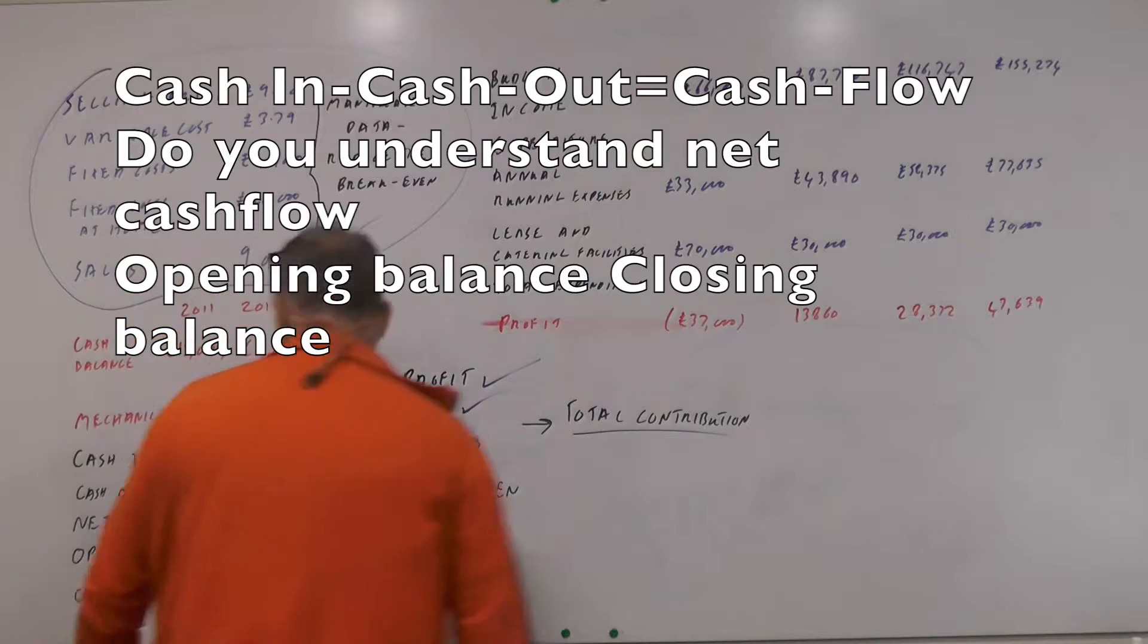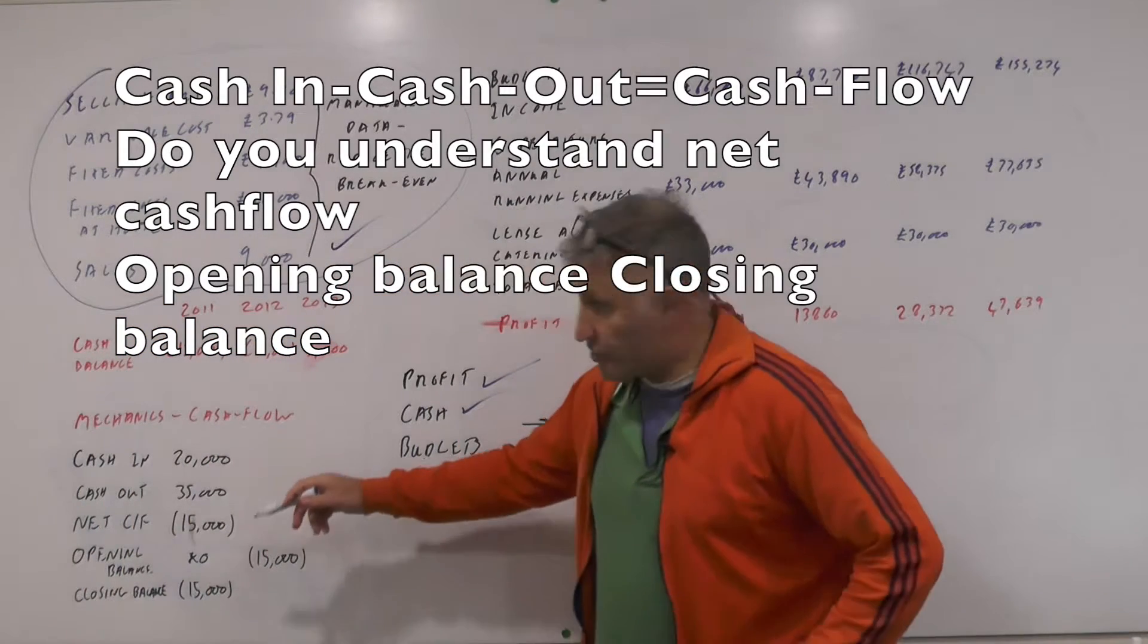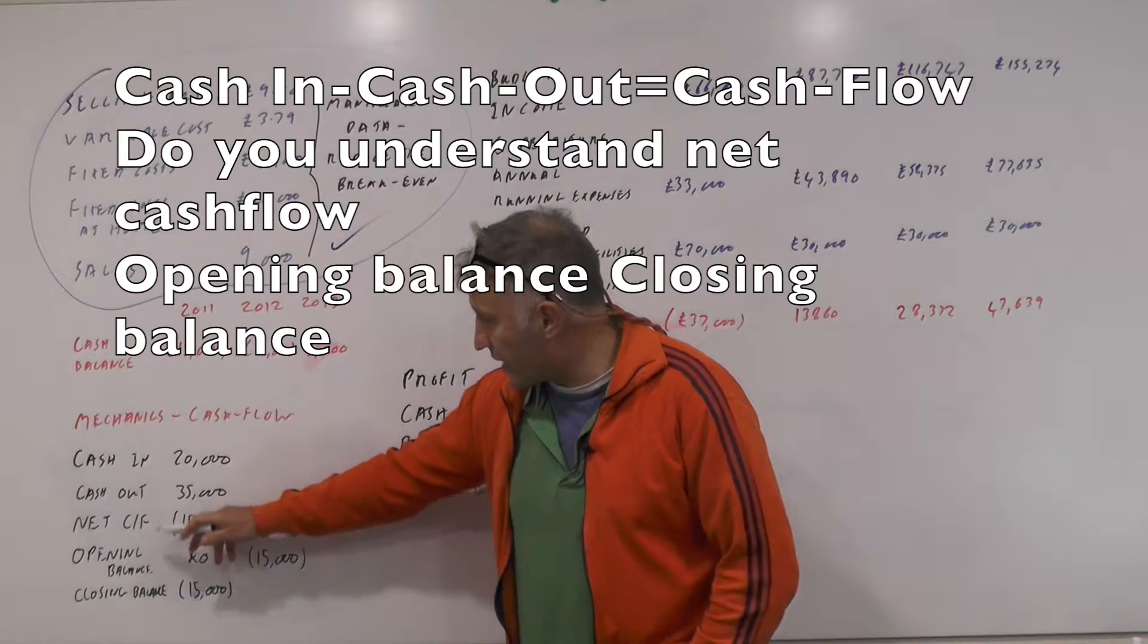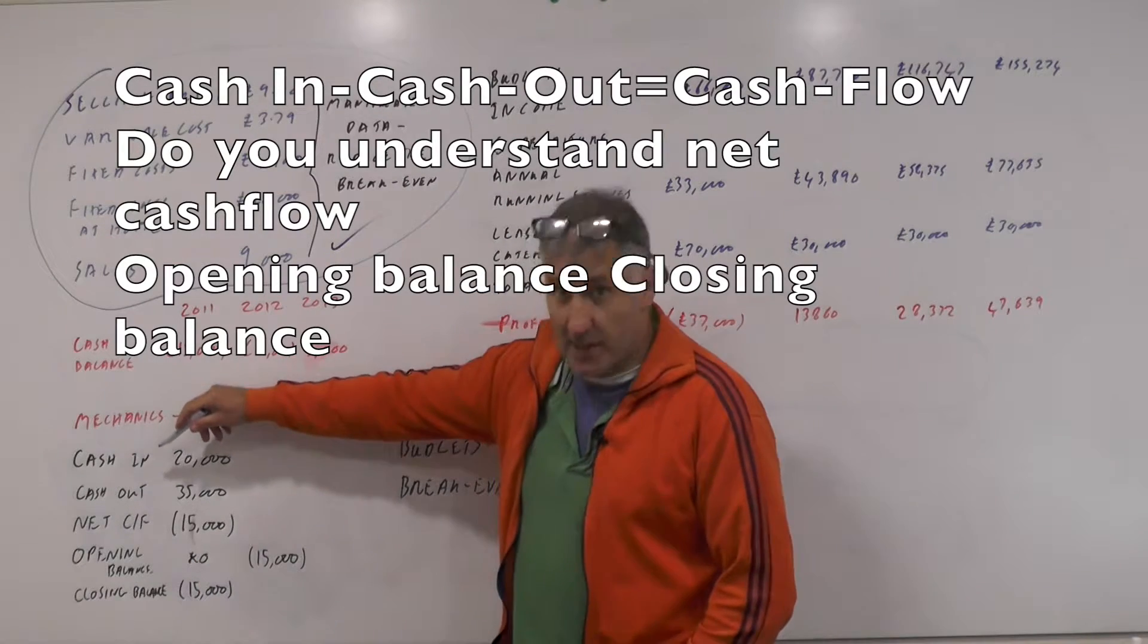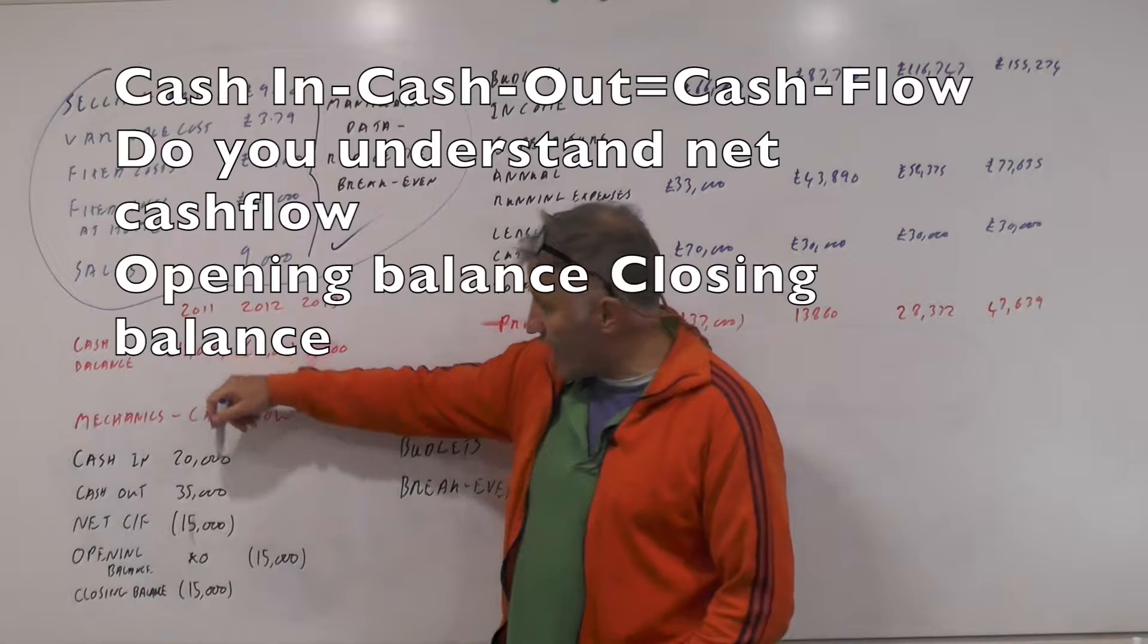The mechanics of a cash flow is basically just cash in, cash out, net cash flow, opening balance, closing balance. Cash in is how much money has come in that month, cash out is how much money has gone out that month.